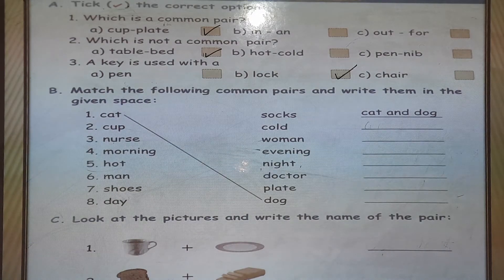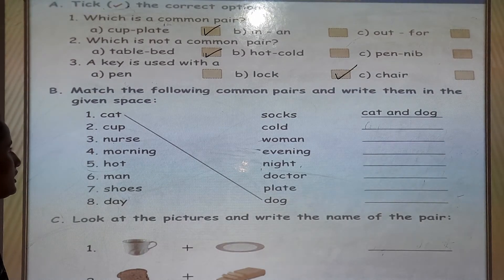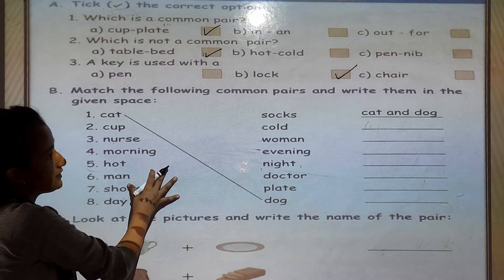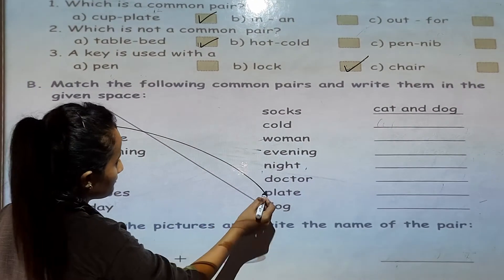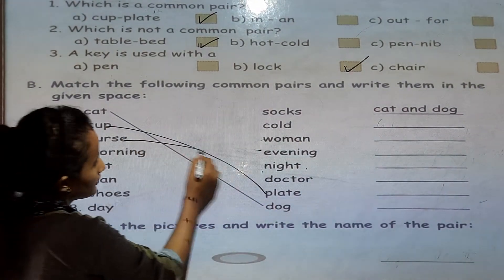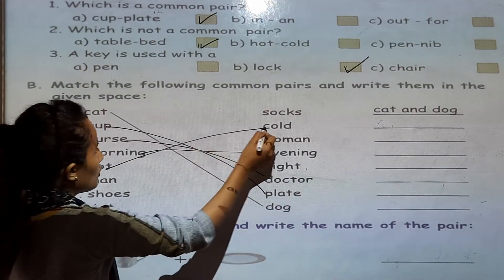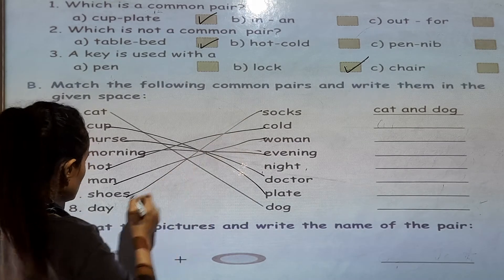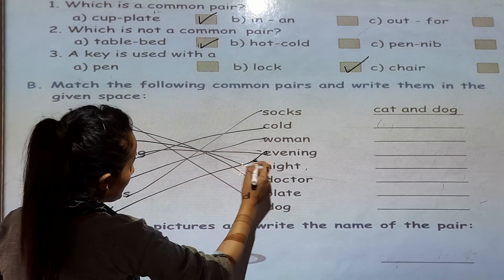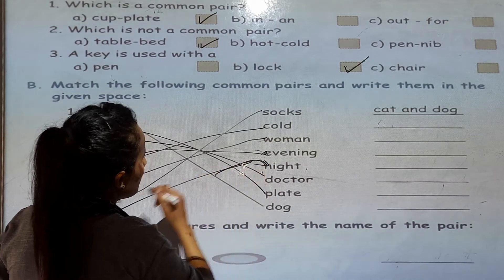Match the following common pairs and write them in the given space. You have to match these words and write them there. The words are: cup and plate, nurse and doctor, morning and evening, hot and cold, men and women, shoes and socks, day and night.